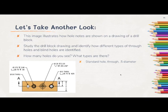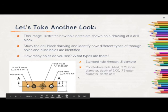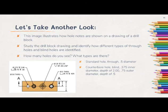So I can see a standard hole that's through and has a 0.5 diameter located right here. There's also a counterbore hole that is blind with a 0.375 inner diameter with a depth of 2 and a 0.75 outer diameter with a depth of 0.5.